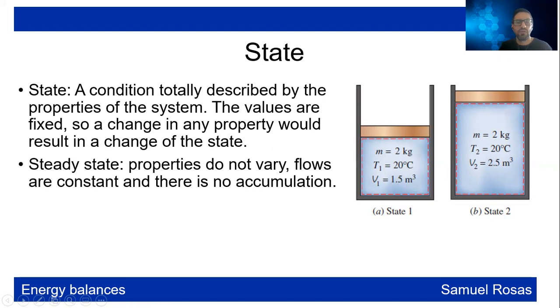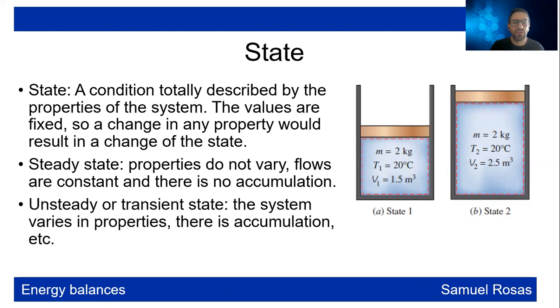Steady state is when the properties do not vary. Flows are constant and there is no accumulation in the system. In unsteady or transient state, the system varies in properties. There is accumulation, etc.